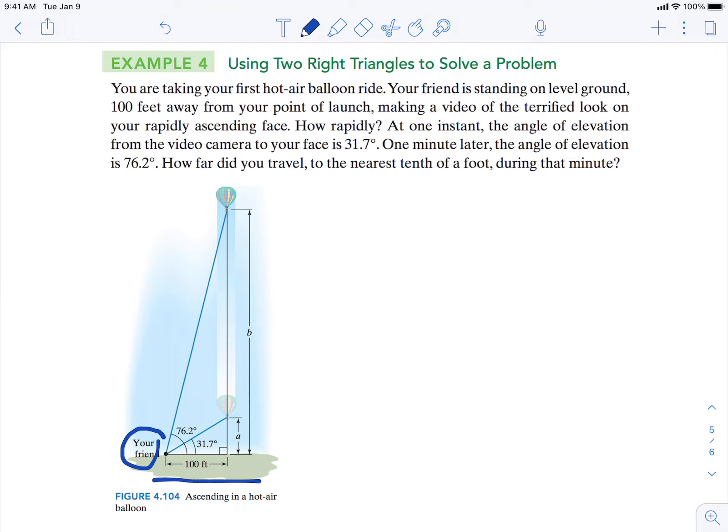At one instant, the angle of elevation from the video camera to your face is 31.7 degrees. One minute later, the angle of elevation is 76.2 degrees. How far did you travel to the nearest tenth of a foot during that minute?